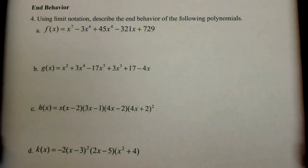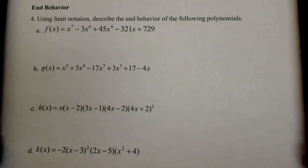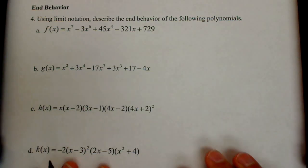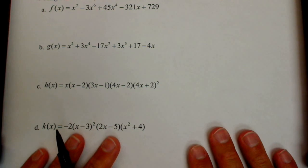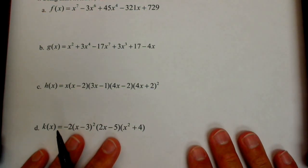In this video we're going to look at end behavior of a function — in this case just polynomials — and we're going to focus more on using limit notation to describe that end behavior of the following polynomials. We have four here; we'll talk about each one and see how we can do this really quickly once we get good at it.